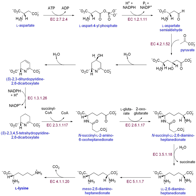Protein synthesis occurs via a process called translation. During translation, genetic material called mRNA is read by ribosomes to generate a protein polypeptide chain. This process requires transfer RNA, which serves as an adapter by binding amino acids on one end and interacting with mRNA at the other end. The pairing between tRNA and mRNA ensures that the correct amino acid is added to the chain. Protein synthesis occurs in three phases: initiation, elongation, and termination. Prokaryotic translation differs from eukaryotic translation; however, the commonalities between the two organisms will be discussed here.